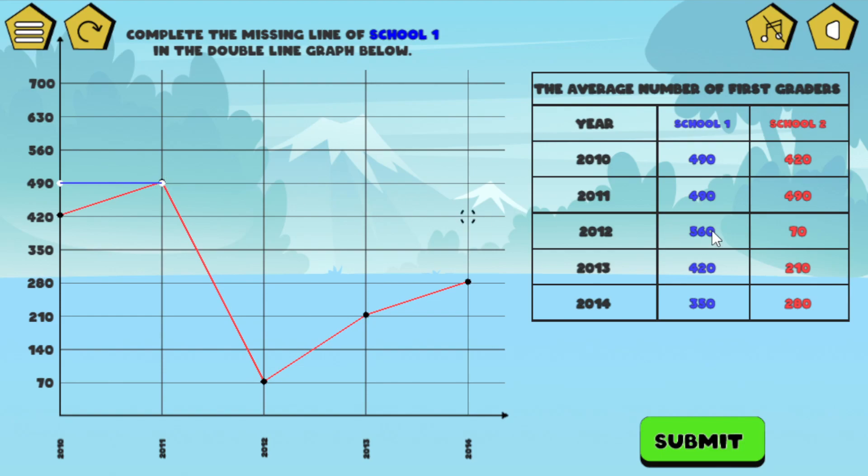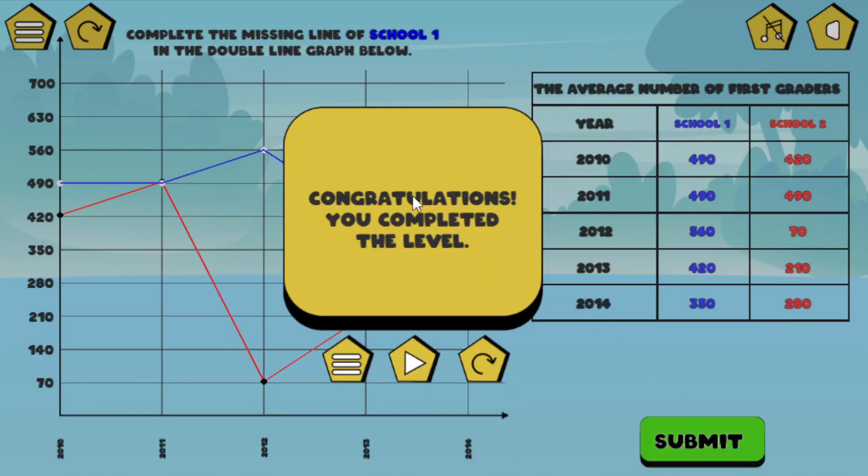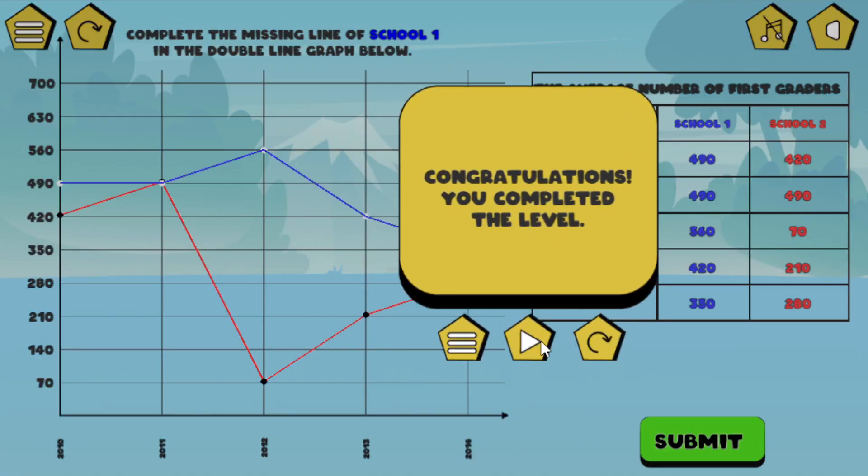The next one is 560. Go ahead and click that. It goes back down to 420. And 350 is down here. So I can check these points. You've got 490, 490, 560, 420, and 350. Now I can check submit. And it says, congratulations, you completed the level. You can go to the next one by clicking this. Get another one.